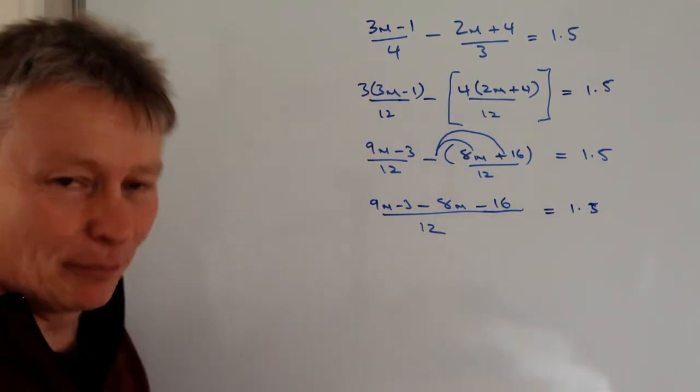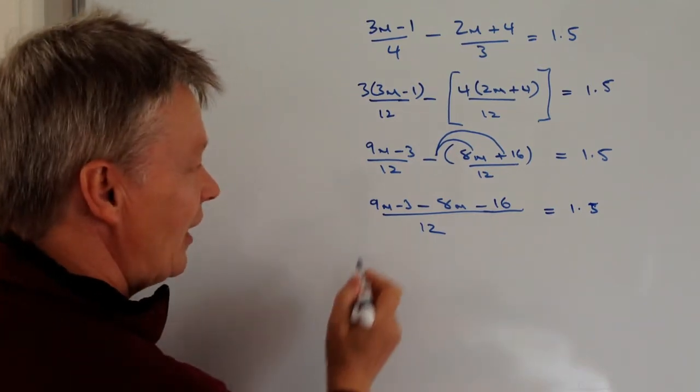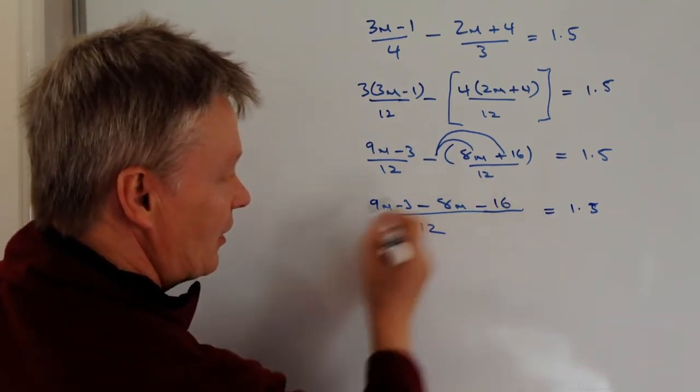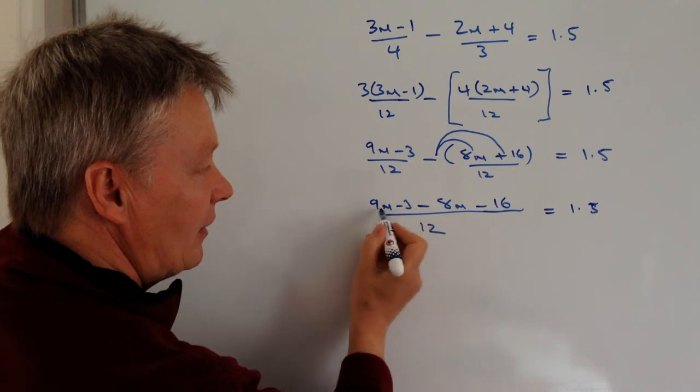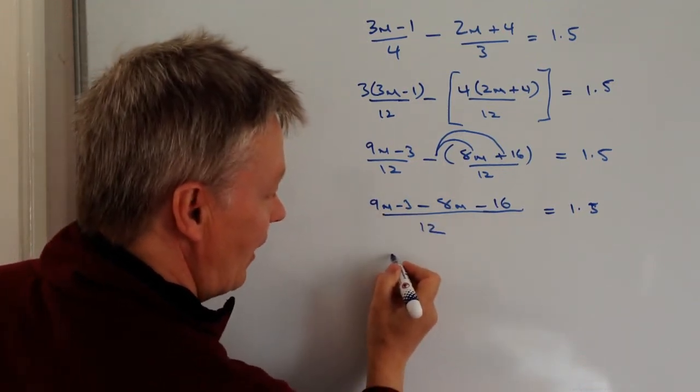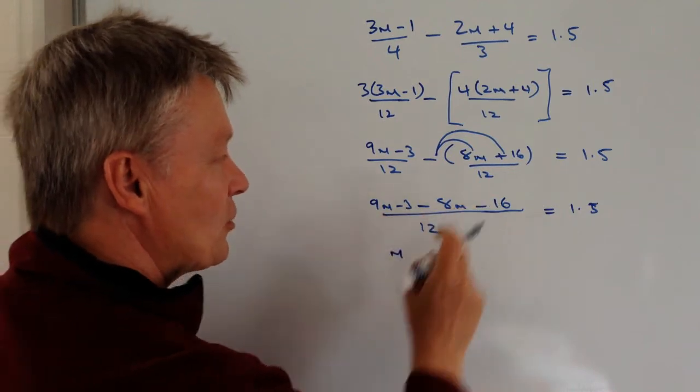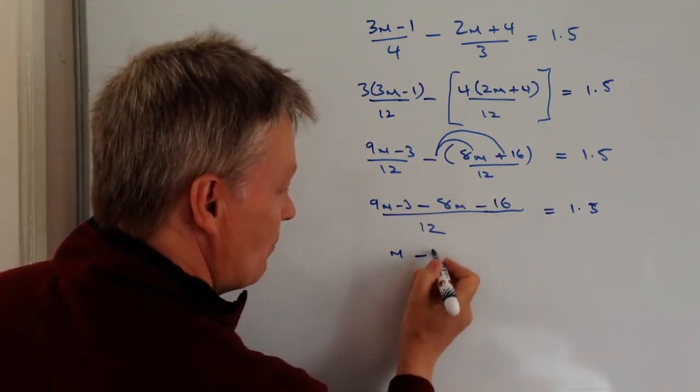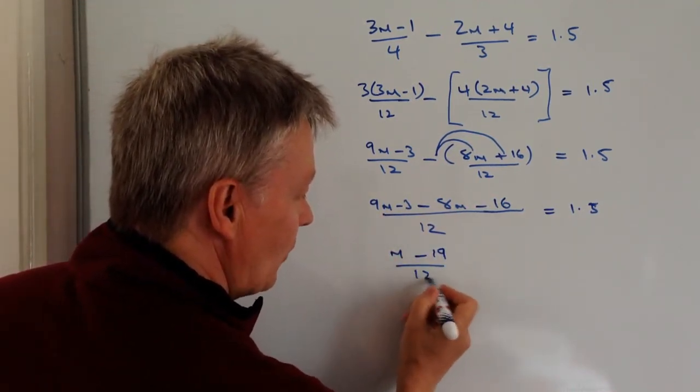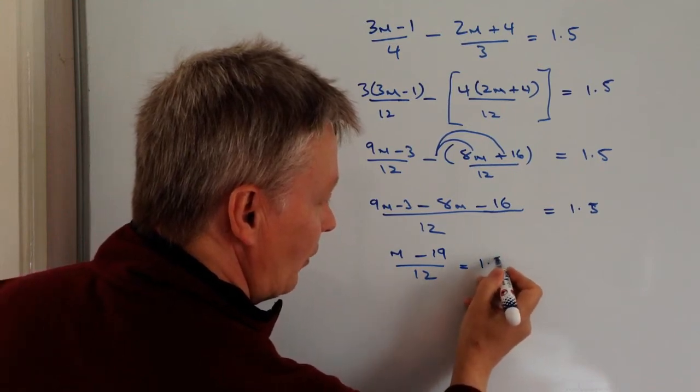I'm looking a little bit better now, so what I'm going to do is I'm going to tidy up this bit at the top. I've got my 9m minus 8m is m on its own, so that looks good to me. I've got minus 3 minus 16 is minus 19 over 12, and that equals 1.5.